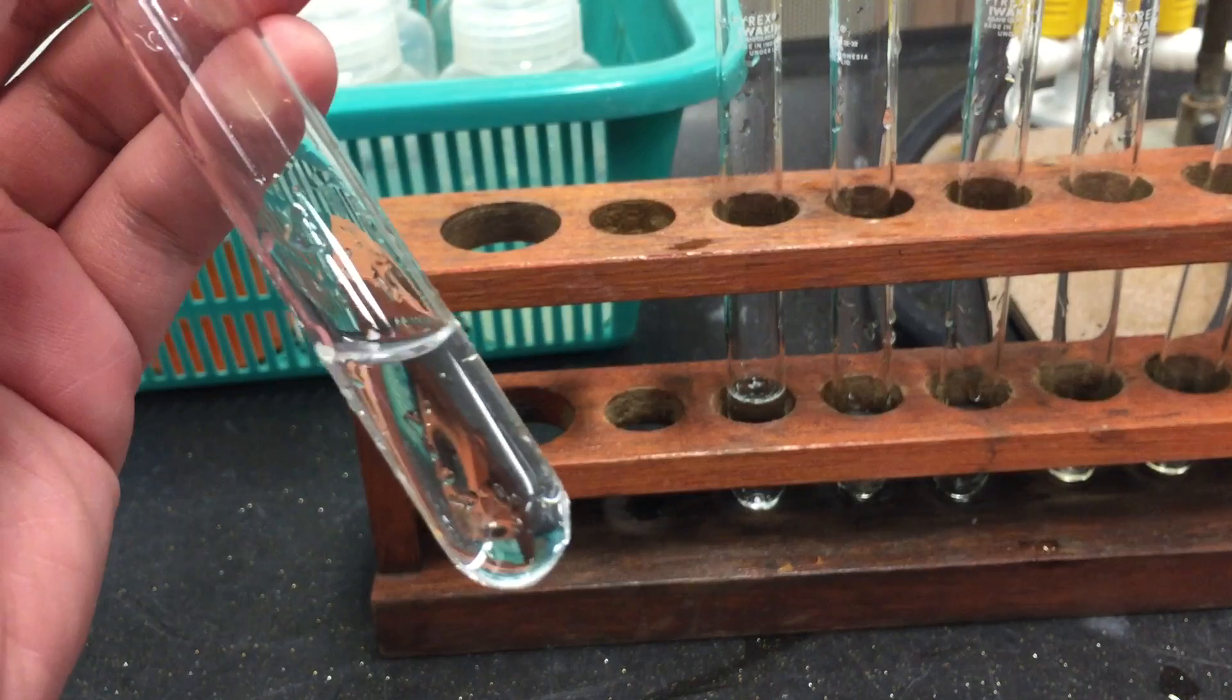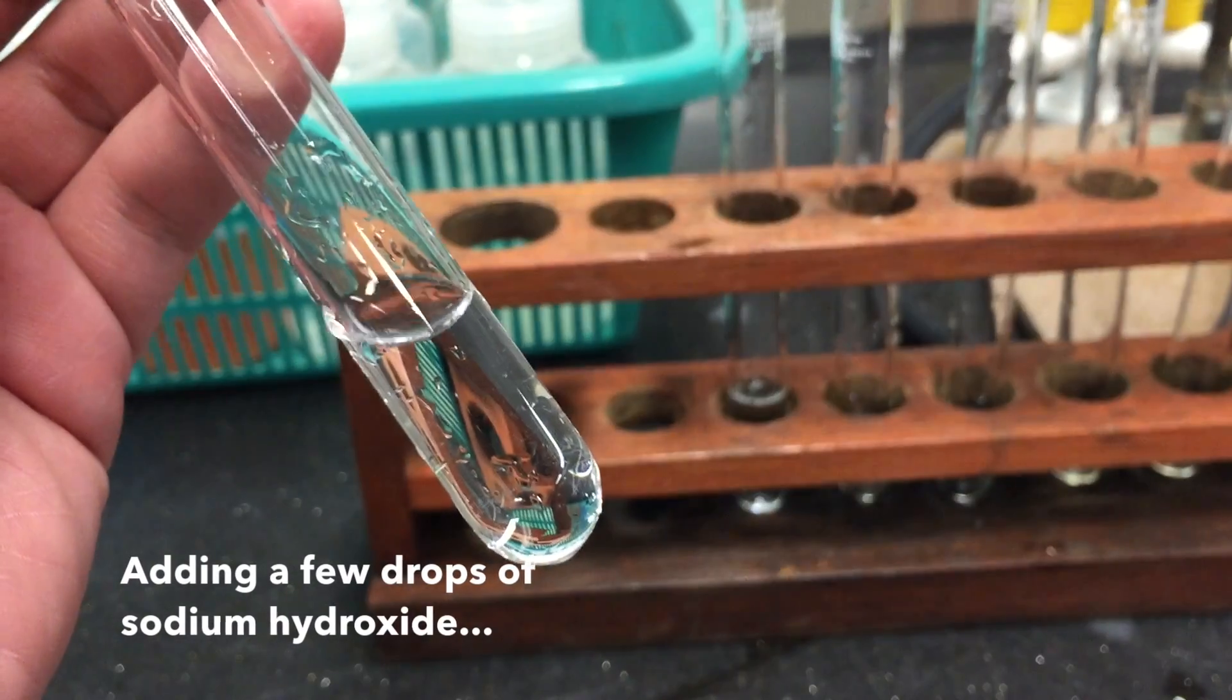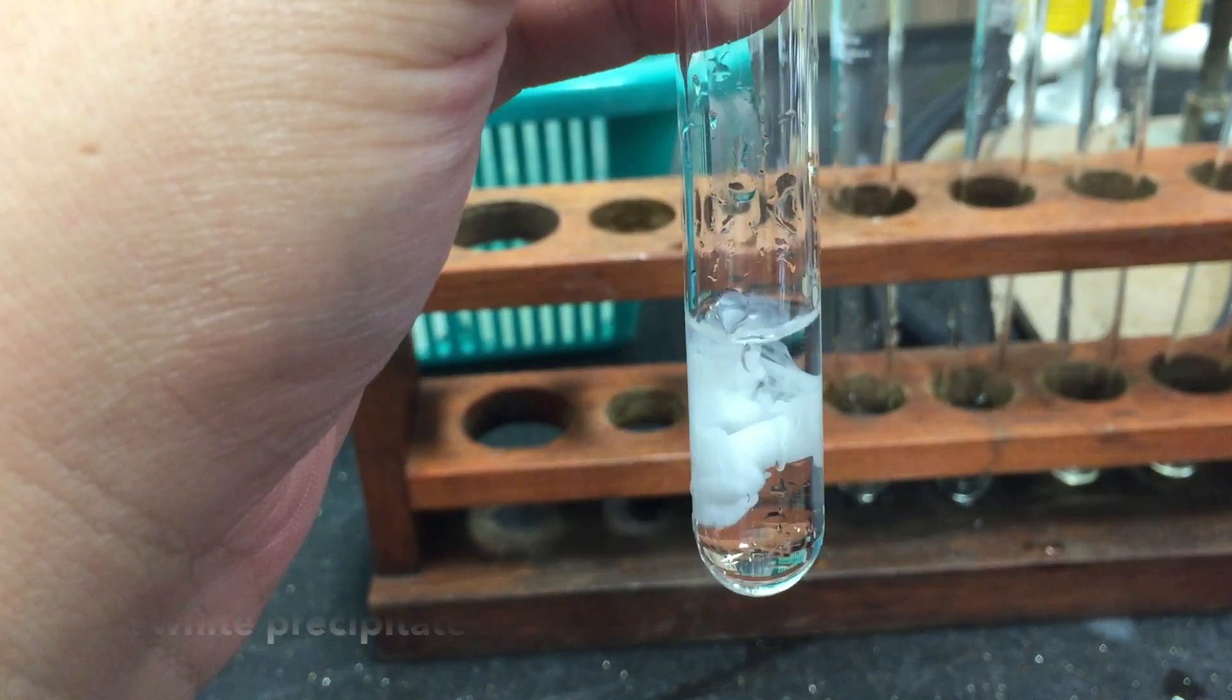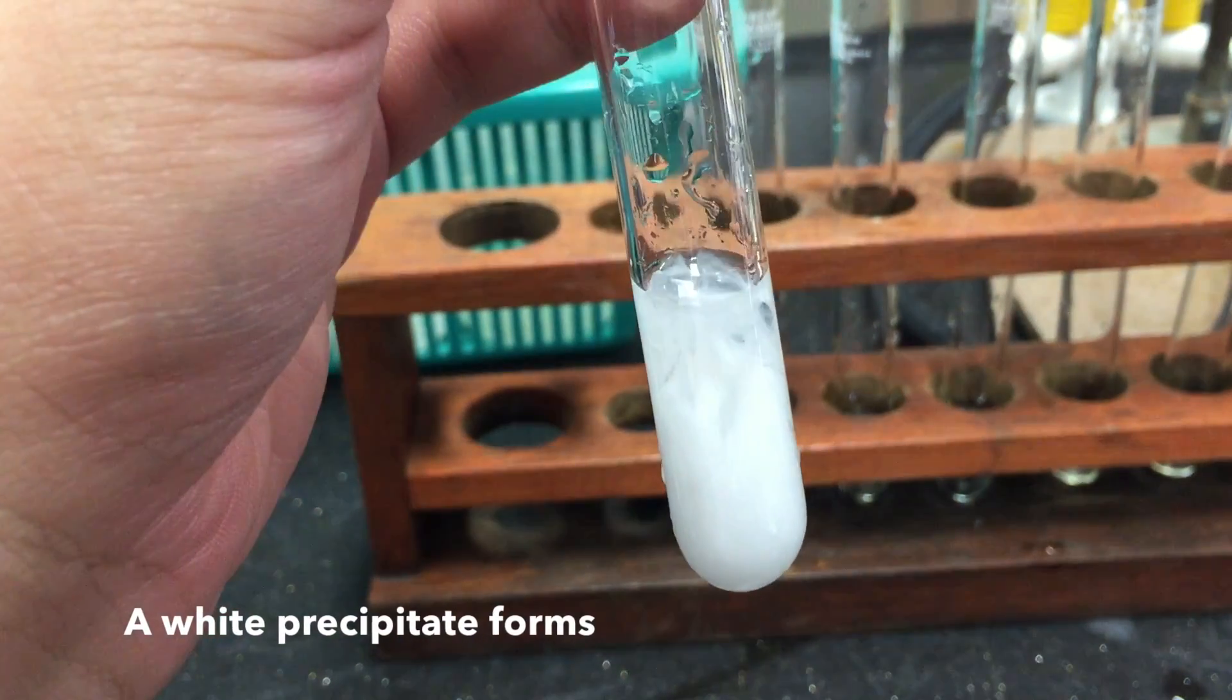To a small sample of your solution, add a few drops of sodium hydroxide. Immediately, a white precipitate forms.